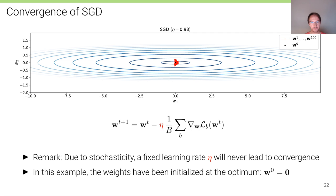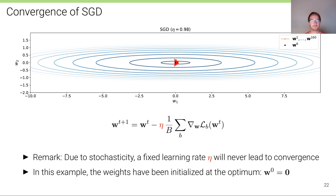Even when starting at the optimal solution, SGD will not stay there because the gradients are noisy — we always step away from the optimum. Starting at zero, we oscillate around zero. With a fixed learning rate η, stochastic gradient descent cannot converge.